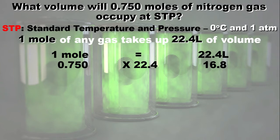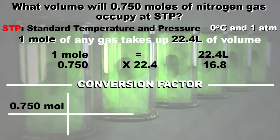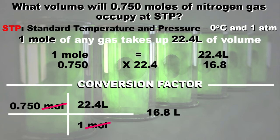Now let's use the conversion factor to make it organized. First, write the table. Next, write the given in the upper left. Remember, we have the relationship 1 mole is equal to 22.4 liters. So we put 22.4 liters in the upper right, and the mole is the bottom unit. Now we will cancel the mole, which gives us 16.8 liters. So 0.75 moles of nitrogen gas will occupy 16.8 liters at STP.